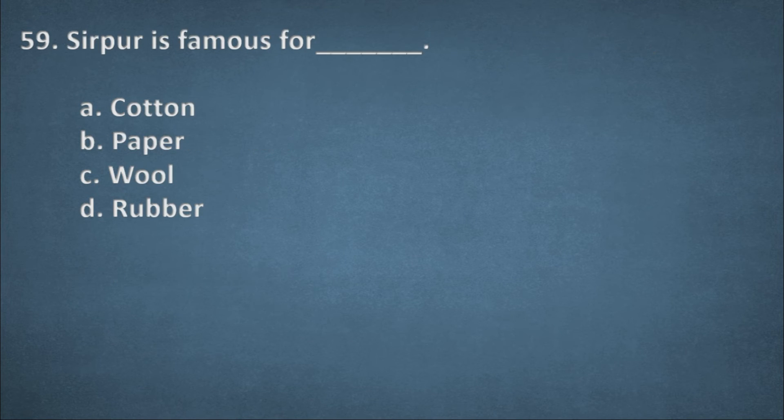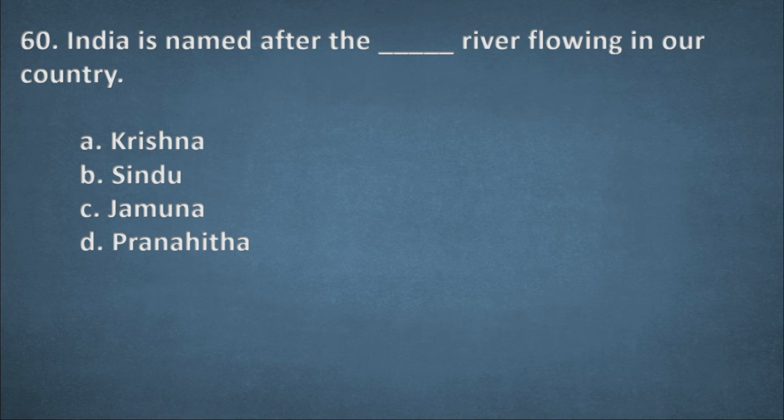Next one. Sirpur is famous for. Options: Cotton, Paper, Wool, Rubber. The right option, Paper. Next one. India is named after the dash river flowing in our country. Options: Krishna, Sindhu, Yamuna, Pranahita. The right option, B, Sindhu.